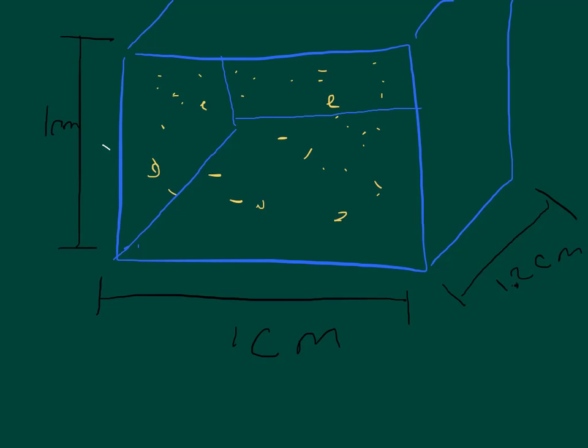Question 9 says an ideal gas occupies a volume of 1.2 cubic centimeters at 20 degrees Celsius and atmospheric pressure. Determine the number of molecules of gas in the container.